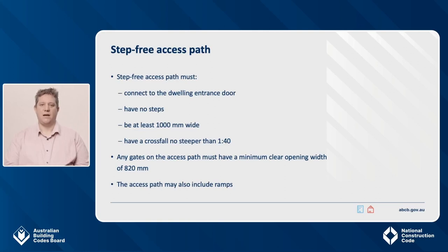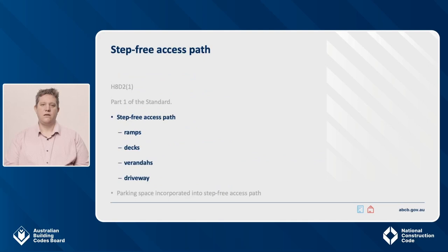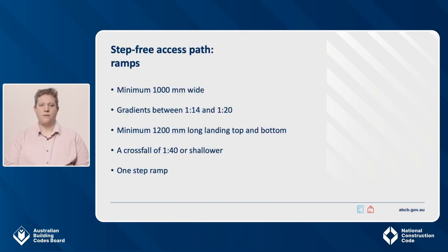Any gates on the access path must have a minimum clear opening width of 820 millimetres. The access path may also include ramps. Any ramps on the step-free access path must be a minimum of 1000 millimetres wide and have a gradient between 1 in 14 and 1 in 20. Ramps must also be provided with a minimum 1200 millimetre long landing at the top and bottom, with a crossfall not steeper than 1 in 40. A step-free path may also include one step ramp.